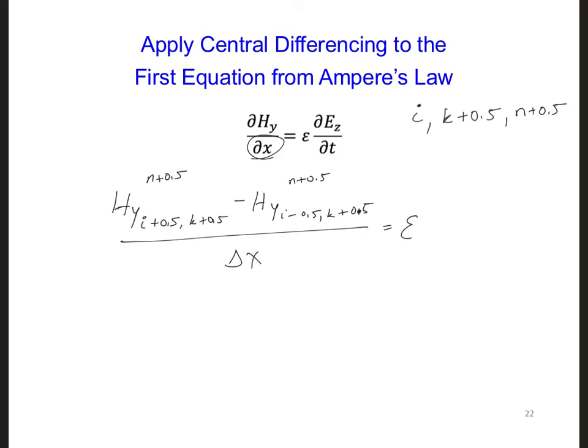This will equal epsilon, and we have E_z at n plus 1, so we're going to center the time derivative at n plus 0.5. So this E_z is located at positions i and k plus 0.5, and subtract E_z at n, i, k plus 0.5. And that's divided by delta t.